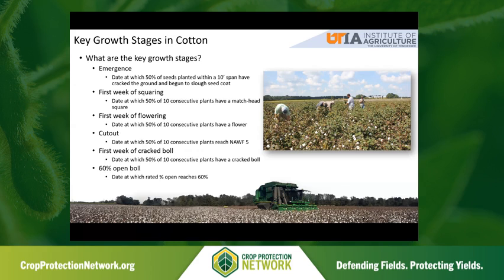What are these key growth stages that we typically talk about? From a research standpoint, we'll typically talk about emergence, the first week of squaring, followed by second, third, possibly fourth week of squaring. Then the first week of flower, second week of flower, third week of flower. Not long after the third week of flower, we'll actually reach cutout. Then we'll reach the first week of cracked boll, and as those bolls continue to open, we'll eventually reach 60% open.